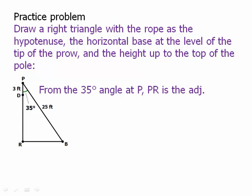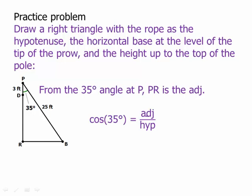Well, from the 35 degree angle at P, PR, that segment PR is the adjacent side. And that's going to help us with the vertical change. So we're going to need that. So the cosine—we need the cosine to relate the adjacent to the hypotenuse. The cosine of 35 degrees is adjacent over hypotenuse. That's PR over 25. So PR would equal 25 times the cosine of 35 degrees. Very good. So we have that length, the length of that entire segment PR.